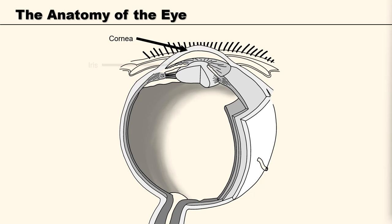Secondly, we have the iris. The iris is a thin, annular structure in the eye responsible for controlling the diameter and size of the pupil, and thus the amount of light reaching the retina. The pupil is the eye's aperture, whilst the iris is the diaphragm. The outward or anterior plane of the iris contains dilator muscles, which allow the iris to contract and dilate to control the amount of light entering the eye and being intercepted by the retina.